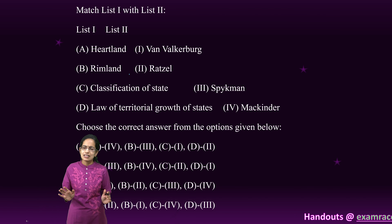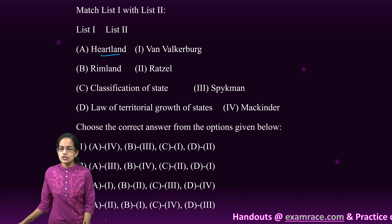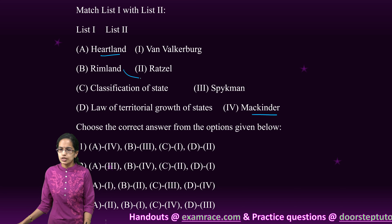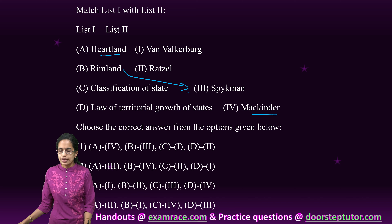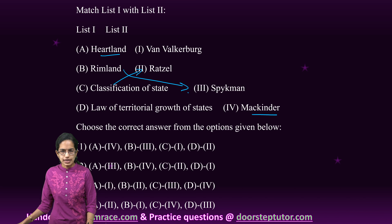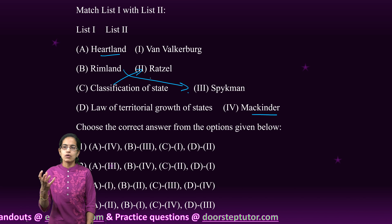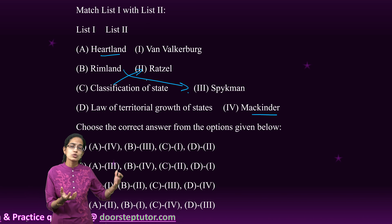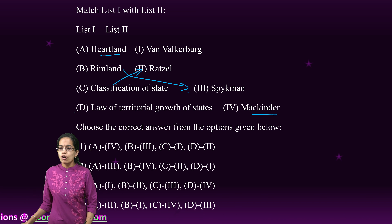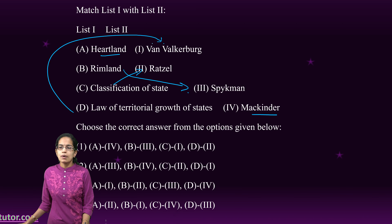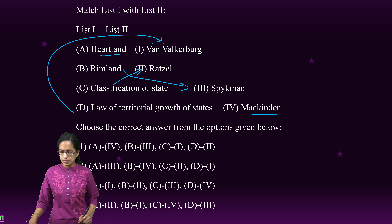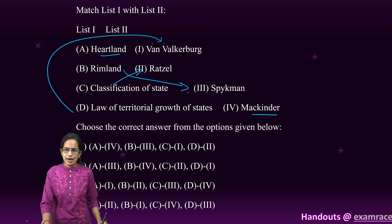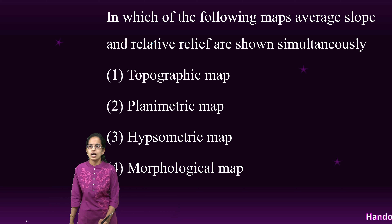The next is a very simple direct question. Heartland theory was given by Mackinder; Rimland theory was given by Spykeman; classification of the state as an organism that grows and dies was given by Ratzel; and the law of territorial growth of the state was given by Volkenberg. Those are the important matches in this direct question.